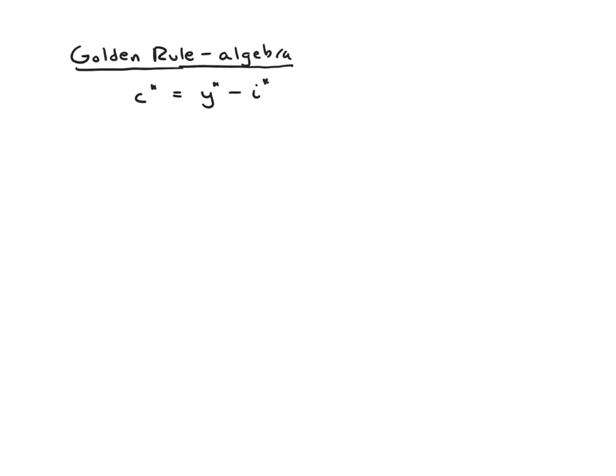So we'll start with some algebra. We know that consumption is, by definition, based on our accounting identity, it's you produce some total amount of output, little y, or output per worker, really, and then you subtract out your investment per worker, and whatever's left over goes to consumption. What we'd like to do now is write all of these variables in terms of k. So the simplest one is we know y is just f of k. Your output depends on your production function and your capital input.